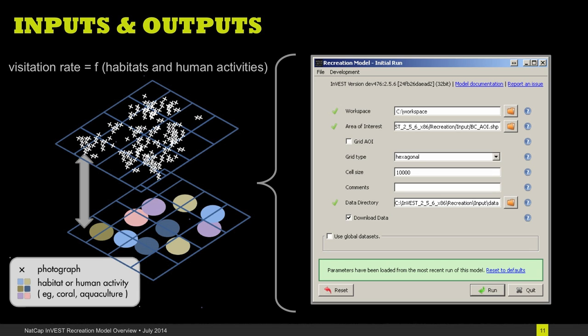There's also an option in the InVEST GUI to include several global datasets that we've included with the distribution of the tool, and those include data on locations of habitats as well as locations of infrastructure and other types of activities around the world.